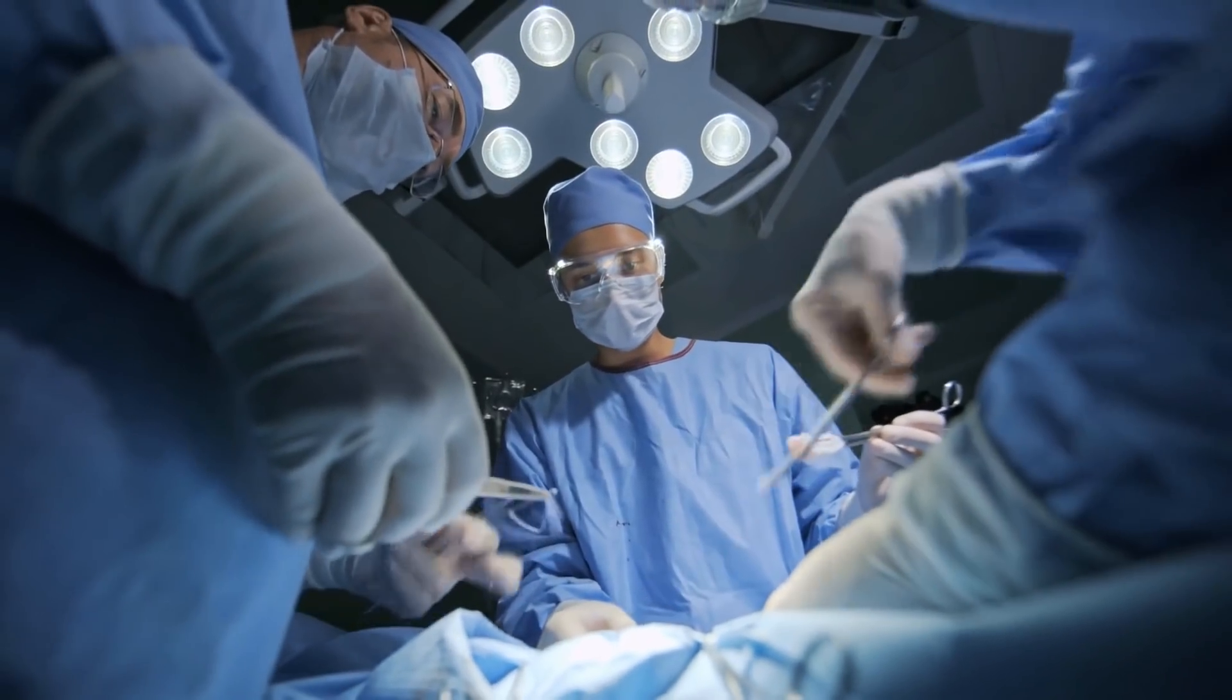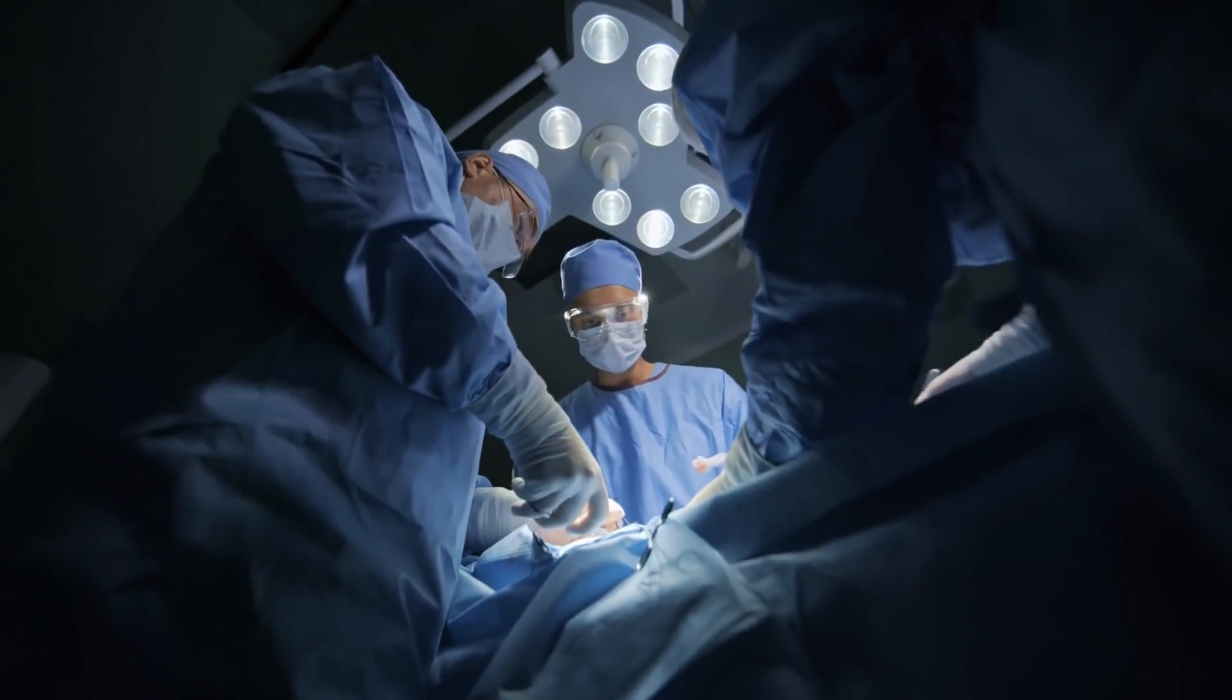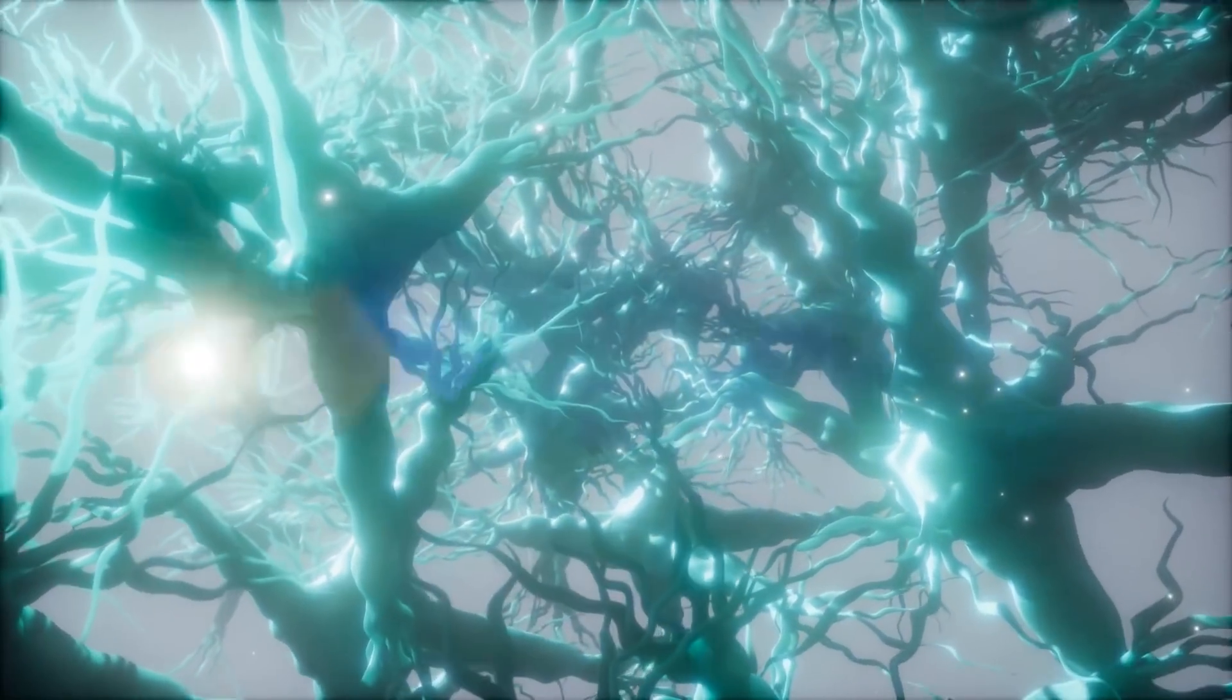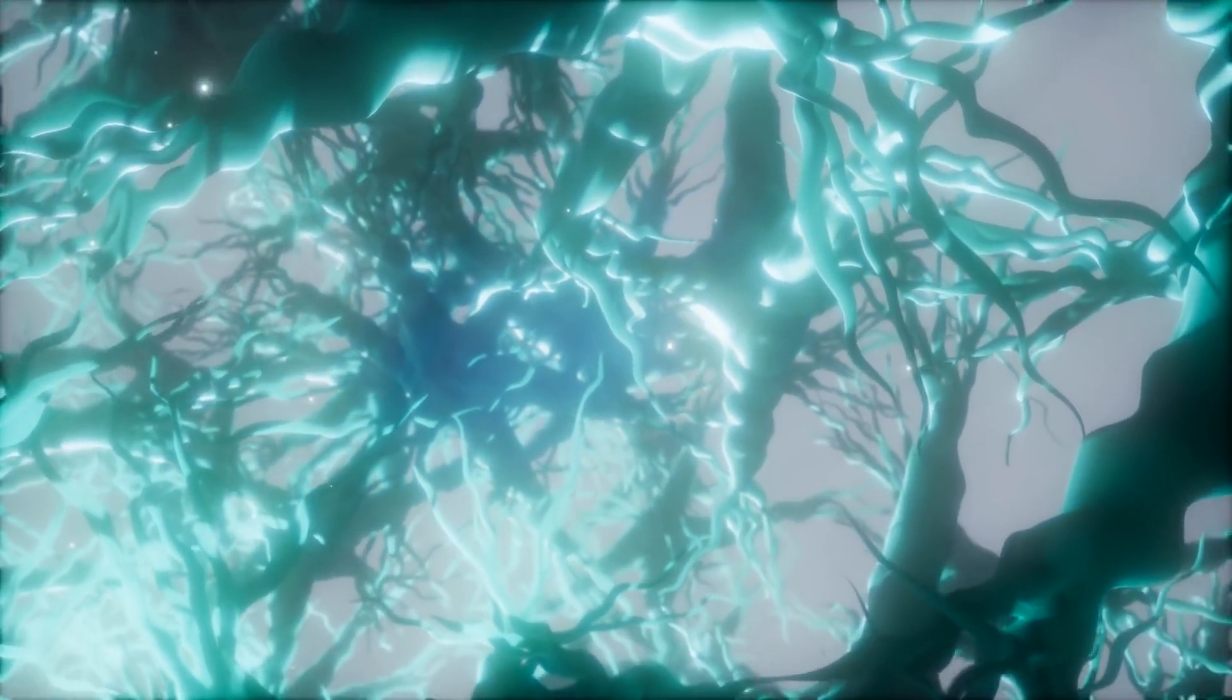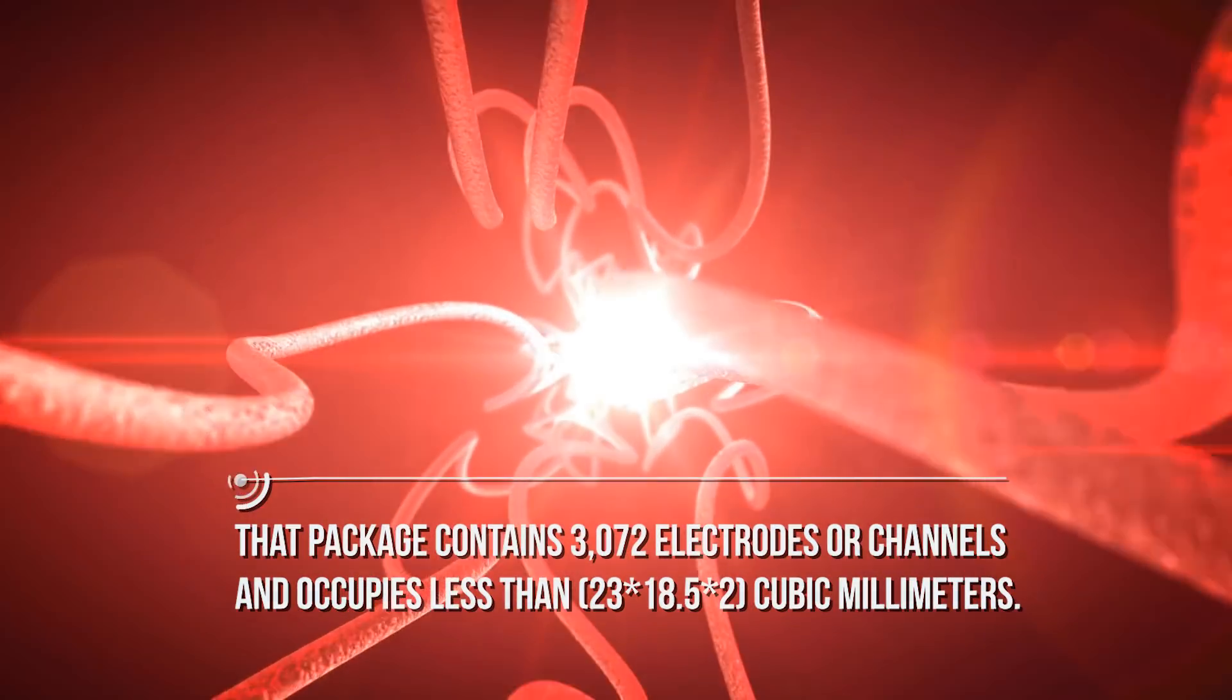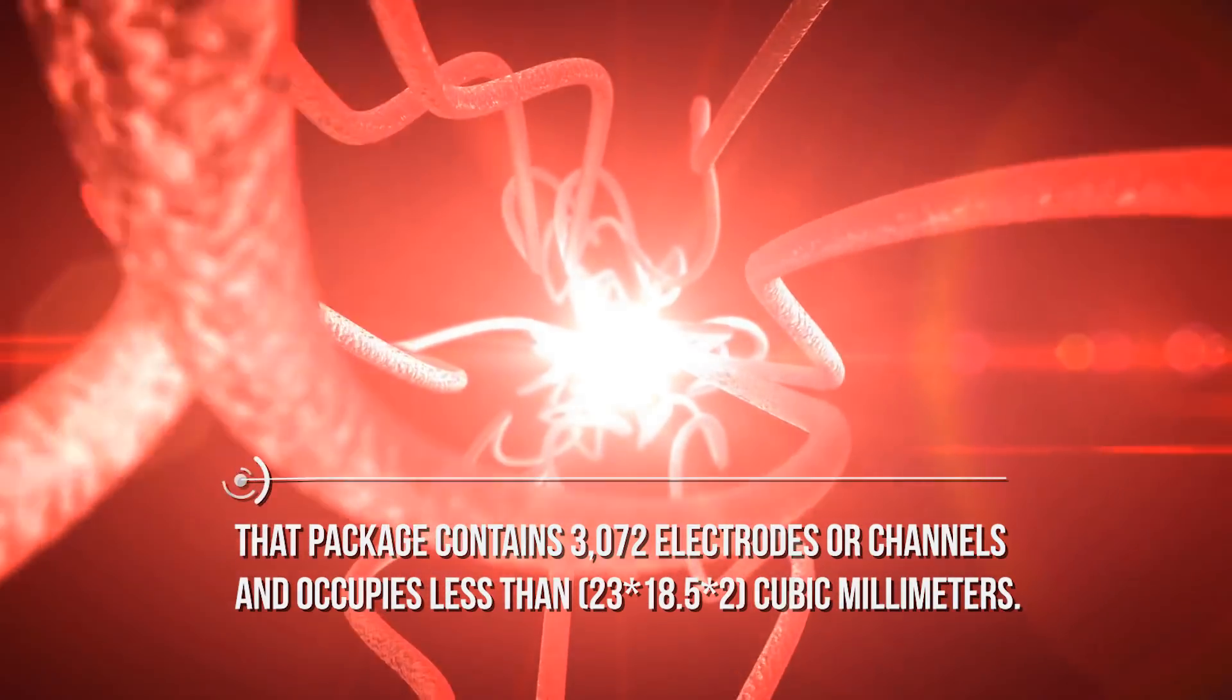Neuralink's approach to brain-machine interfaces technology has unprecedented packaging density and scalability in a clinically relevant package, where the electrode array is packaged into a small implantable device containing custom low-power onboard chips for amplification and digitalization. That package contains 3,072 electrodes and occupies less than 23 x 18.5 x 2 cubic millimeters.